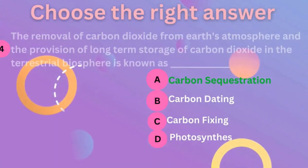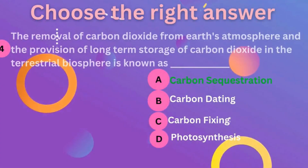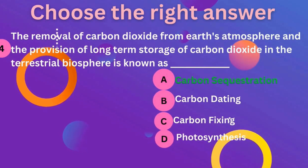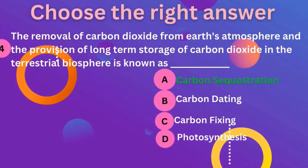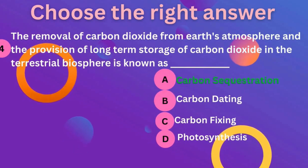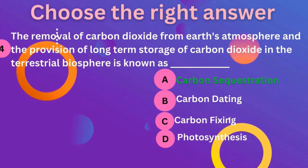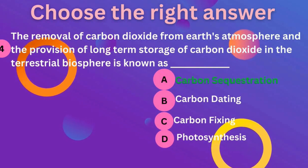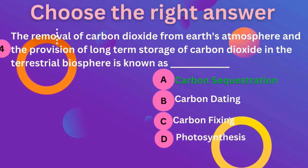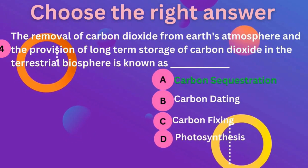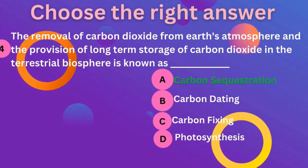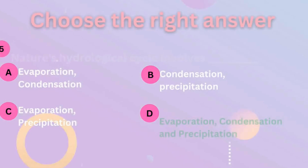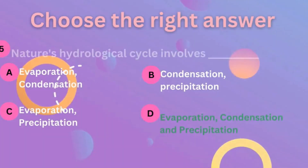Fourth question: the removal of carbon dioxide from the Earth's atmosphere and the provision of long-term storage of carbon dioxide in the terrestrial biosphere is known as? The correct answer is carbon sequestration.